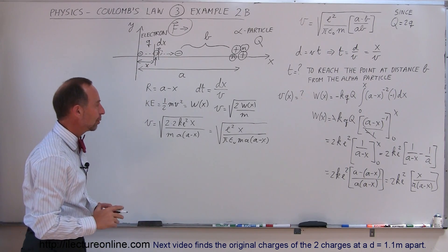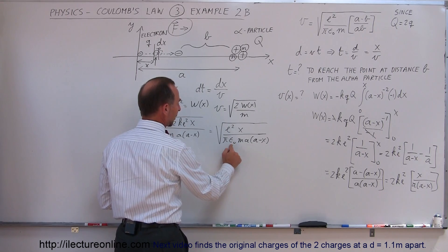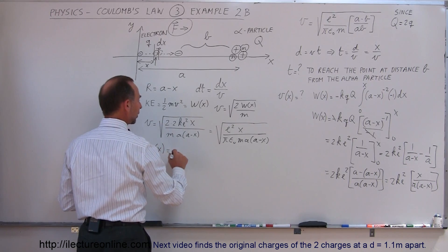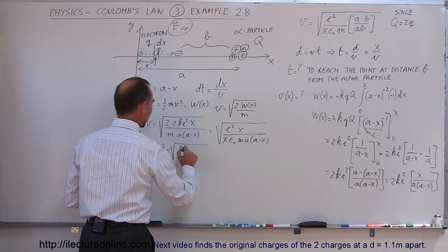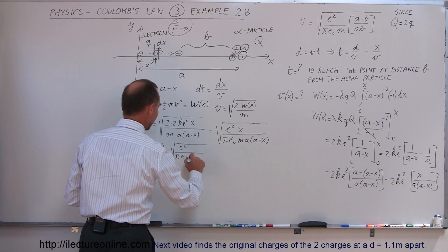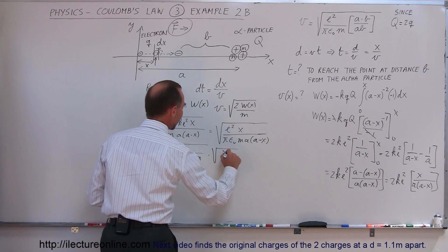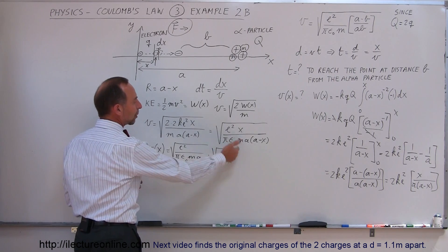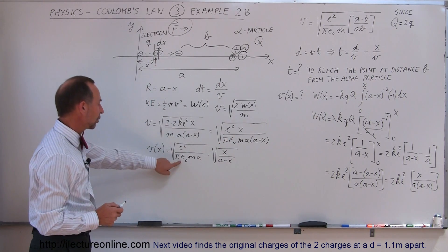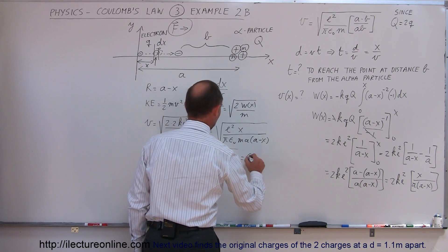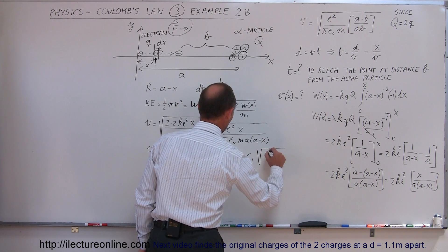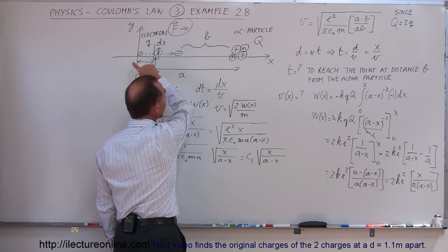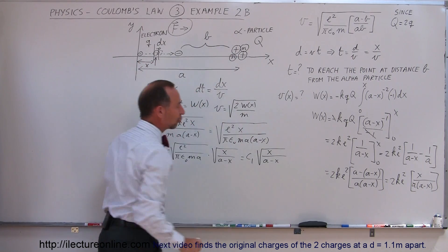We can factor out everything that's a constant — a, m, ε₀, π, and e² are all constants — so velocity as a function of x equals the square root of e² divided by π ε₀ m times a, times the square root of x over (a minus x). Since the first part is a constant when we integrate, we only have to worry about the x-dependent portion. I'll call that whole constant c1, so velocity equals c1 times the square root of x divided by (a minus x). This is now the velocity of the electron as it flies towards the alpha particle in terms of x.